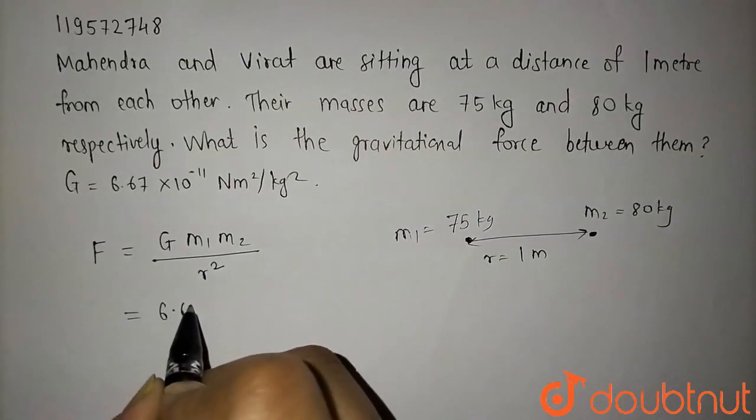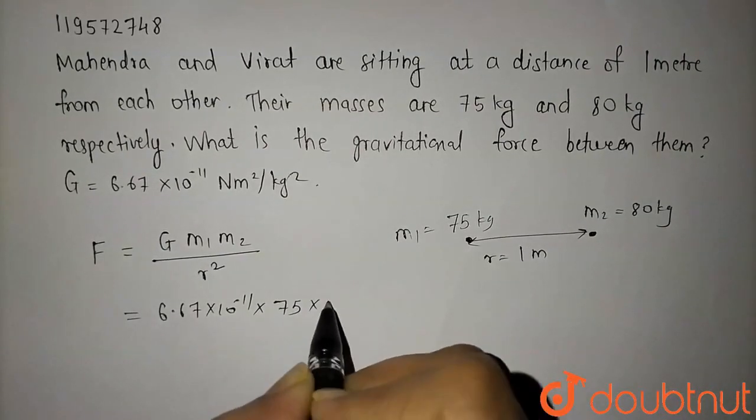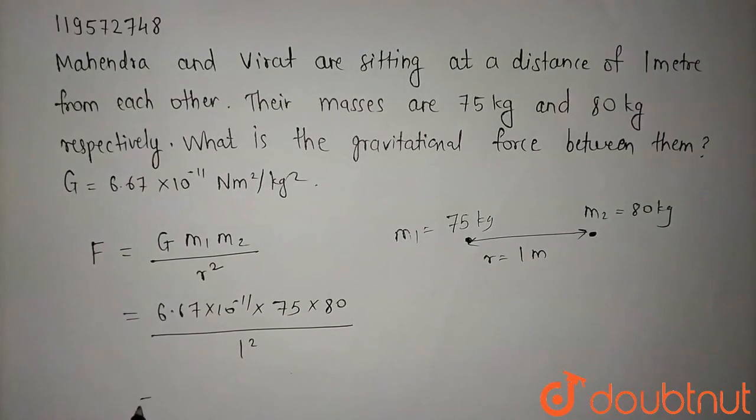G's value is given here: 6.67 into 10 raise to minus 11. M1 is 75, M2 is 80, and R's value is 1, and its square.